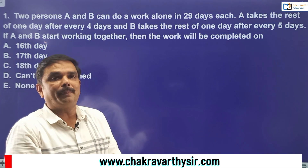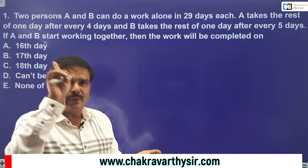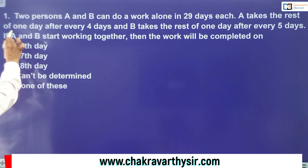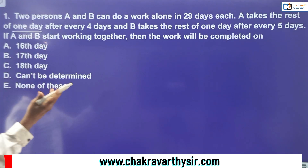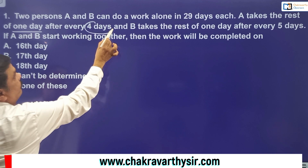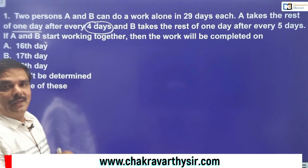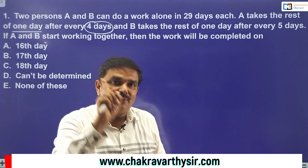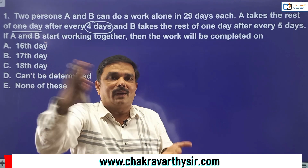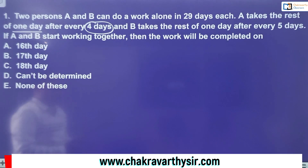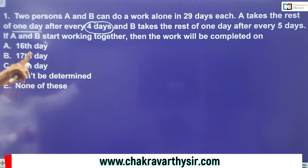That means A takes 29 days to complete the work, and B also takes 29 days to complete it separately. Then A takes one day rest after every four days — meaning A works for four days, then takes rest on the fifth day, then from the sixth day starts working again for another four days, and then takes one day rest. As far as B is concerned, B takes one day rest after every five days — after every five days, on the sixth day he takes rest, and from the seventh day onwards he continues for another five days.